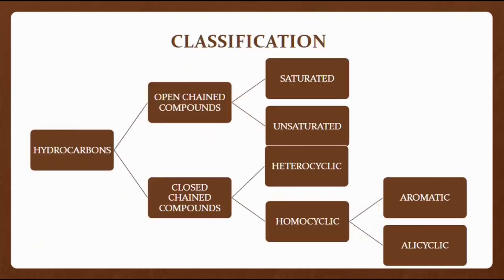Hydrocarbons can be classified as follows. Hydrocarbons are divided into open chain and closed chain compounds. Open chain compounds can further be classified as saturated and unsaturated. Closed chain compounds can further be classified as heterocyclic and homocyclic. Homocyclic compounds can be both aromatic or alicyclic.